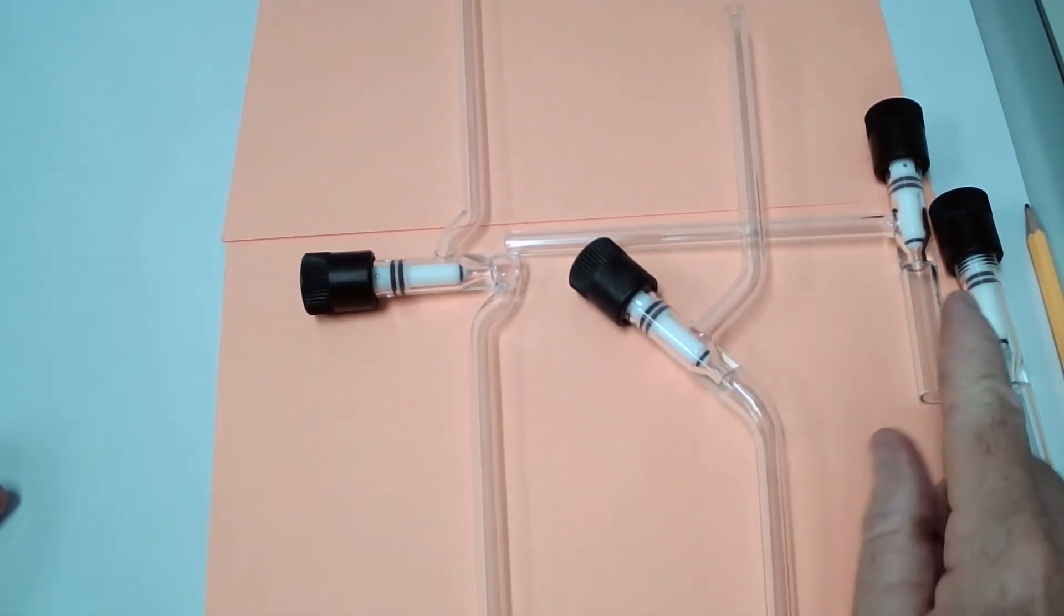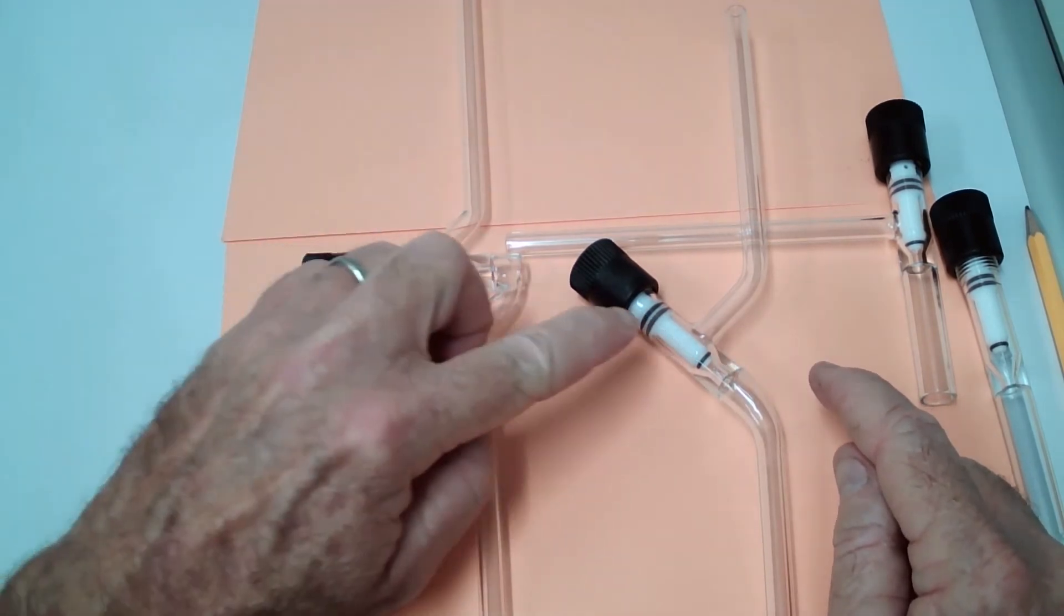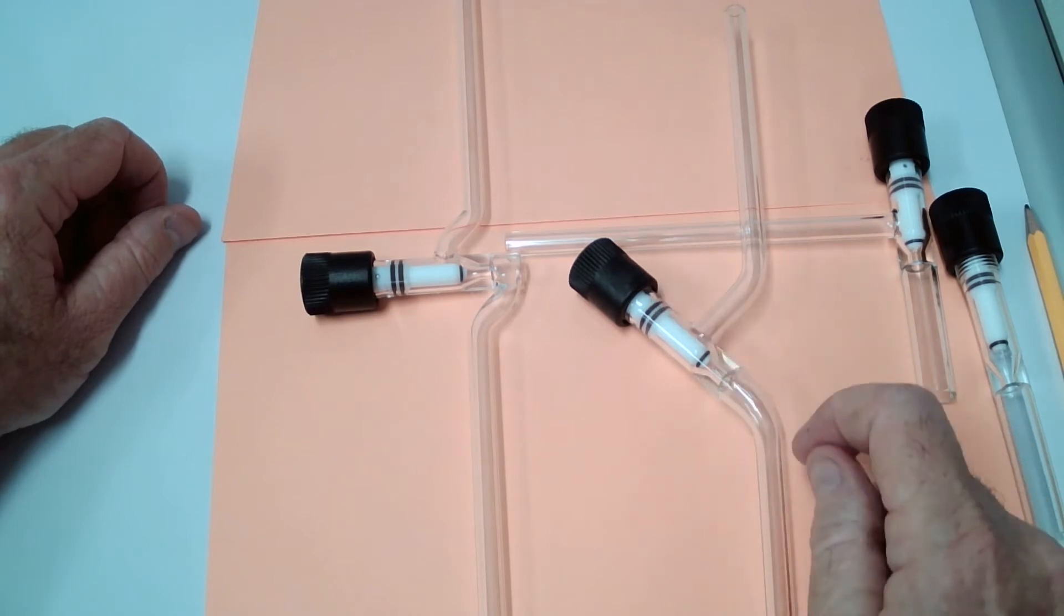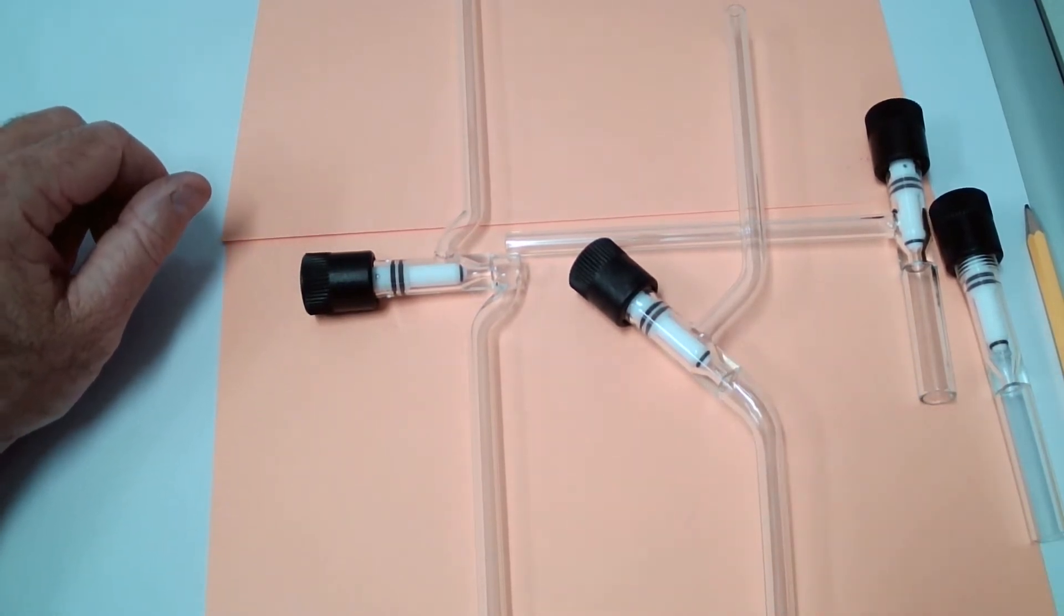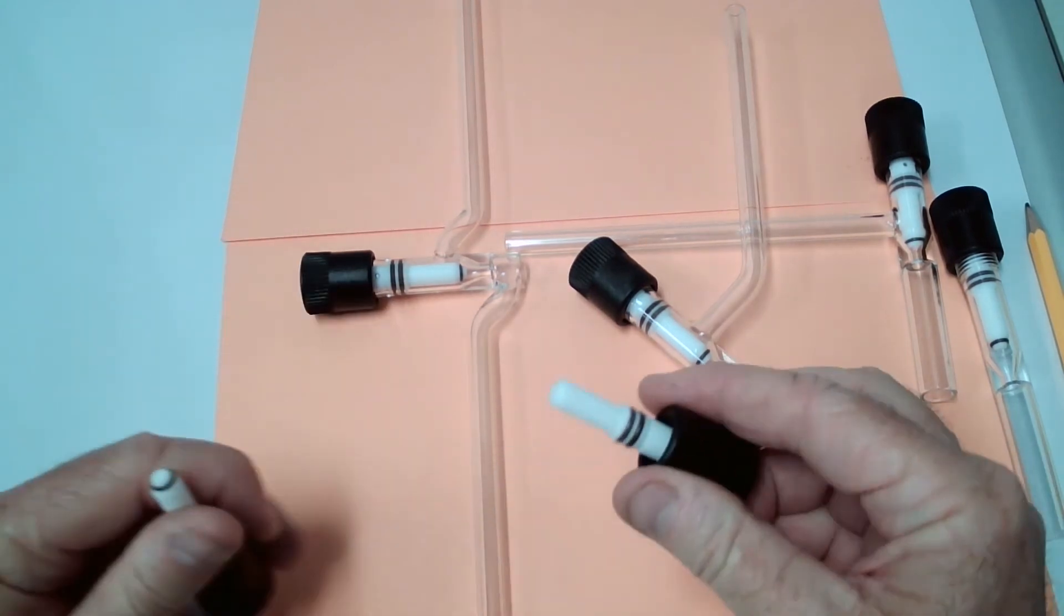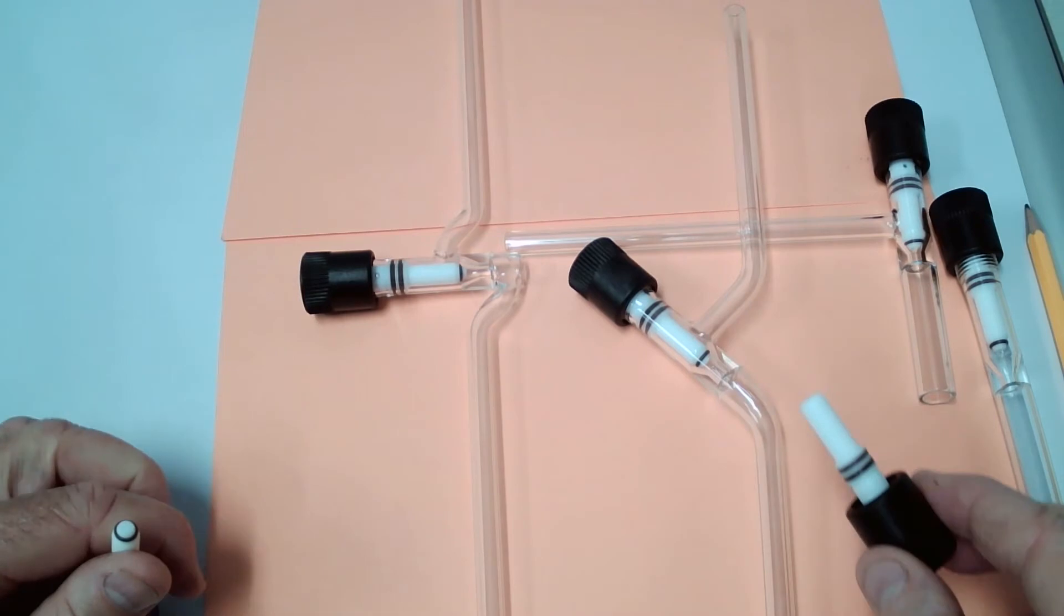They are all the same as far as the valve thread with the Teflon backing O-rings and the tip O-rings. All the plugs are interchangeable, so all these will also use the valve plug without the tip O-ring, just plain Teflon.